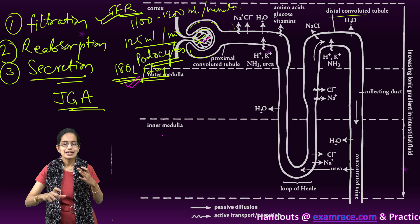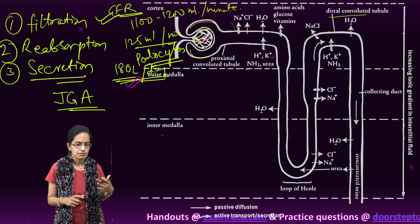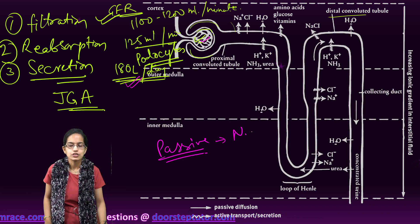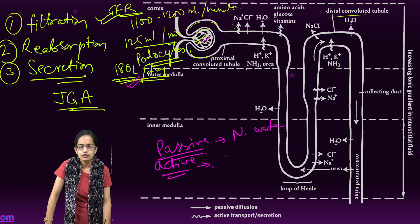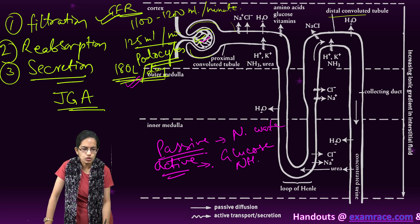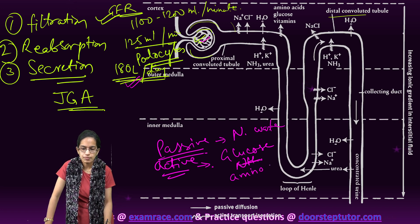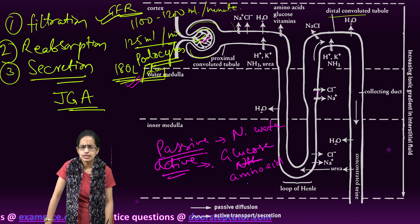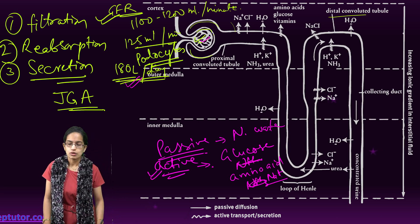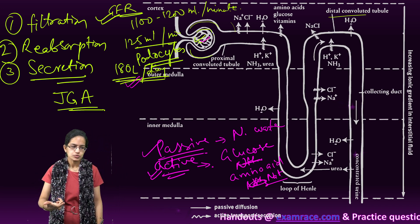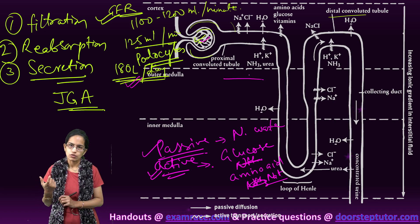In the case of passive reabsorption, only nitrogenous waste is involved. However, active reabsorption includes reabsorption of glucose, amino acids, and sodium ions. Water is also reabsorbed passively, but only in the initial segment of the nephron.